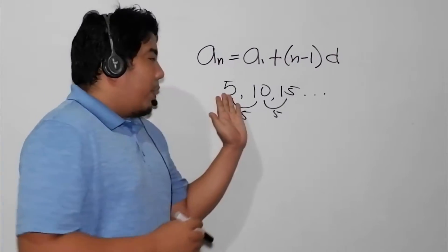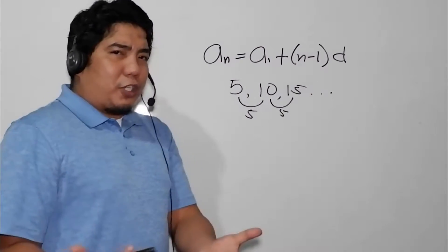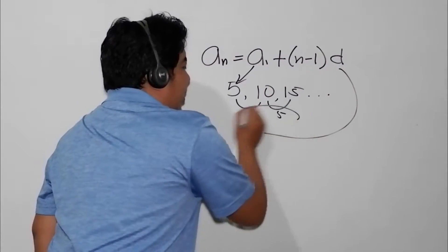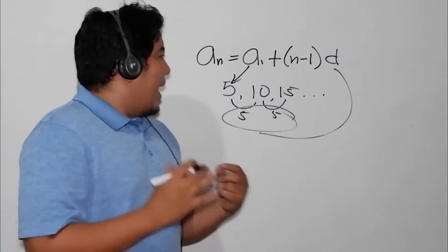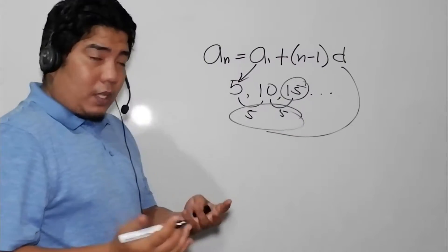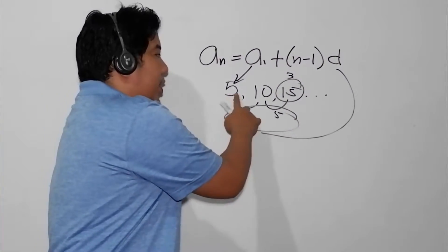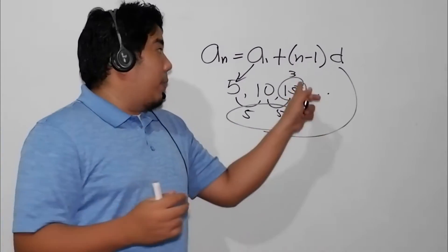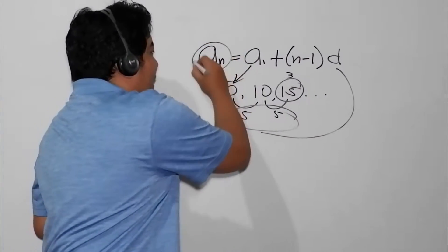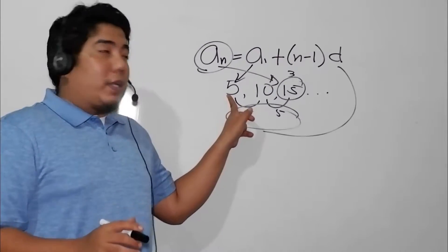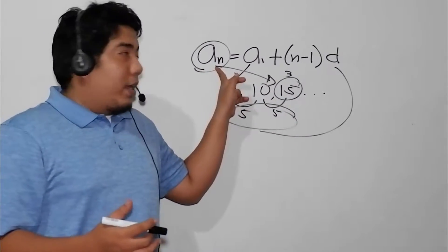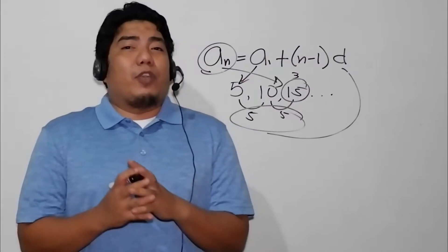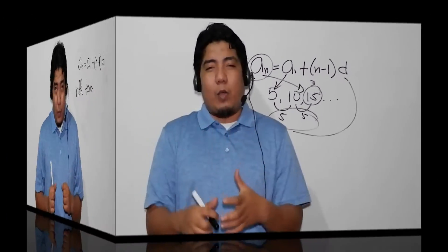Let's get a deeper review on this. We have the arithmetic sequence. Can we name the first term? Our first term is 5. What is the common difference? The common difference here is 5. If we are talking about the third term, N here is 3 — because this is 1st, 2nd, and 3rd. The actual value of the third term is 15. So: first term is 5, last term is a sub 3 which is 15, N is 3, and the common difference is 5.